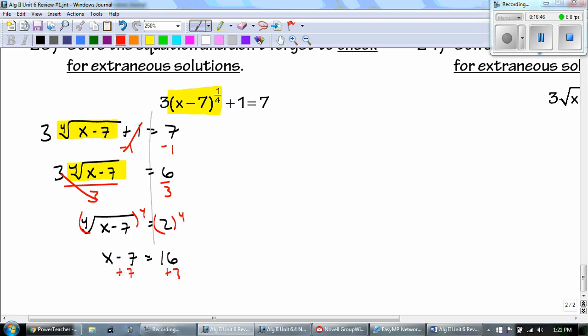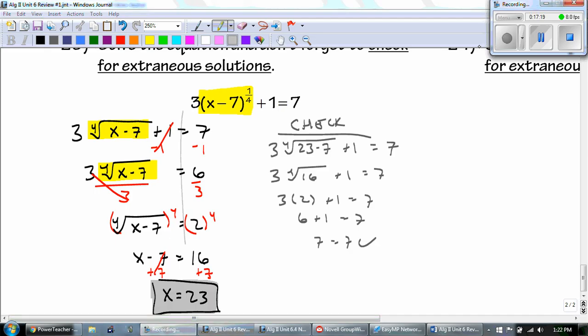And then, add the 7 to the other side to get 23. So, once again, I don't know if that works or not. It's all up to you. Make sure to check. So, it's 3 to the fourth power. It's the fourth root of 23 minus 7 plus 1 equals 7. Go ahead and pause the video, and good luck. And that worked. We got x equals 23.